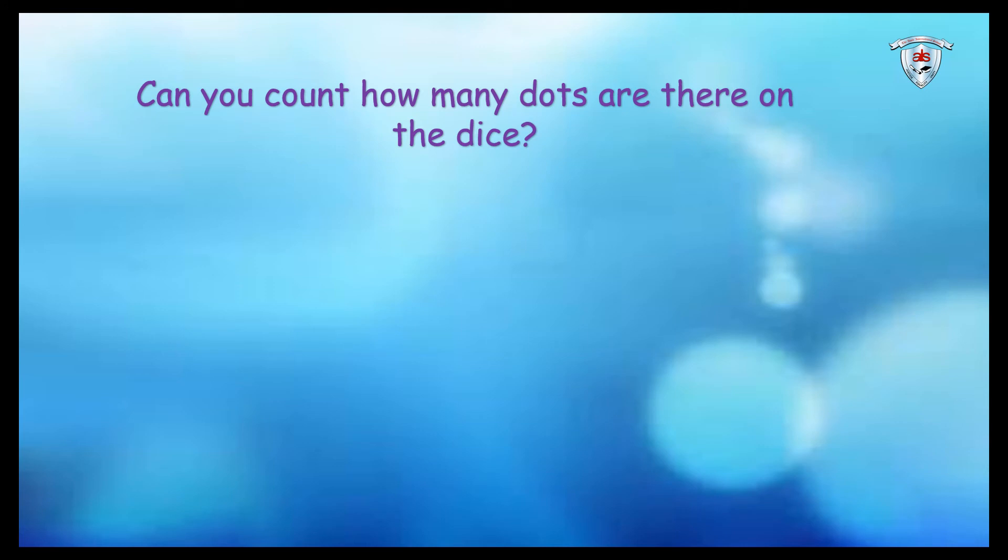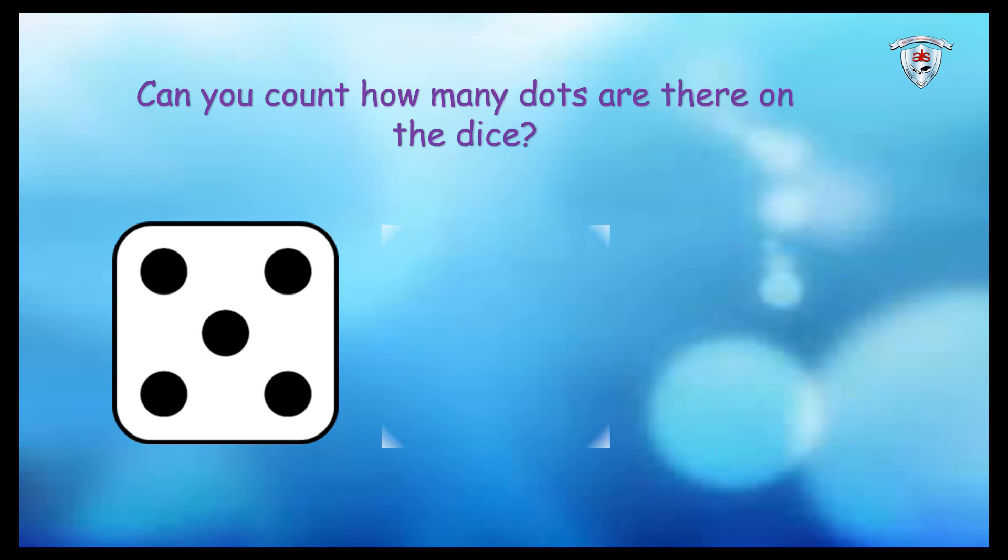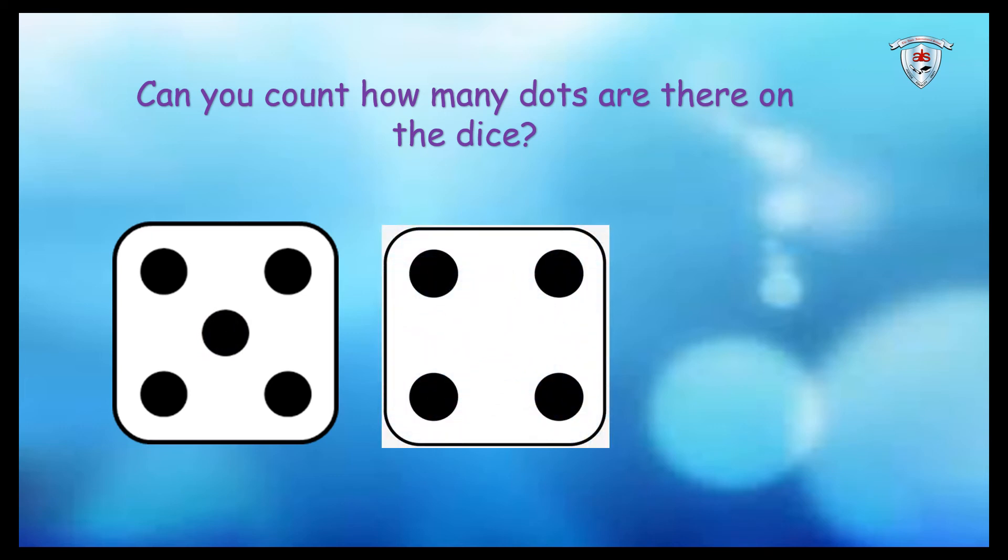Okay, so now children, can you count how many dots are there on the dice? Can you count the black dots on the dice? Yes, for you it's very easy as you have done this with other numbers. Let's count: 1, 2, 3, 4, 5, then 6, 7, 8, 9. Wow, absolutely correct! Well done, kids.